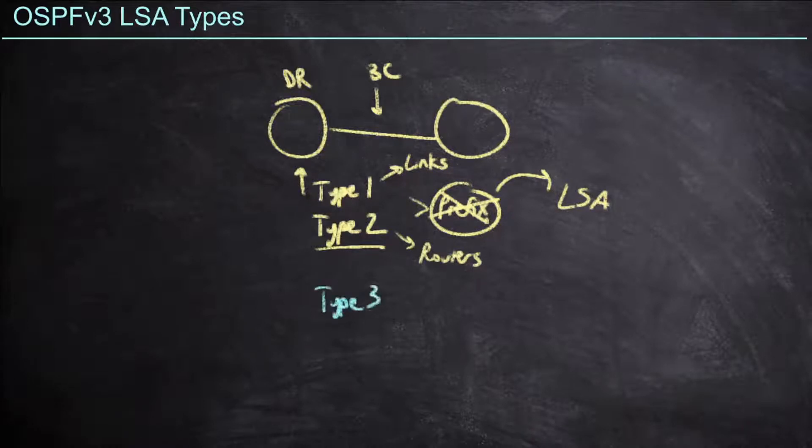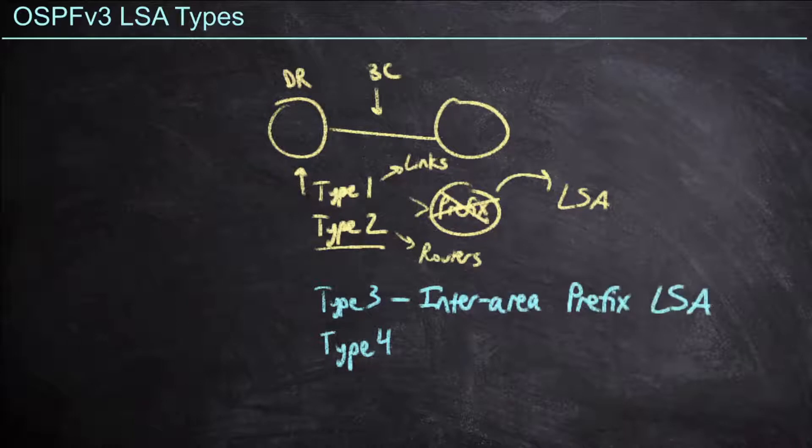Now, there is a change with type 3s and type 4s as well, but it doesn't have to do with functionality in any way. It only has to do with the name. Type 3s were called summary LSAs in OSPF v2, but in OSPF v3, we call this the inter-area prefix LSA. Keep in mind that a type 3 is sent by an area border router, or ABR.